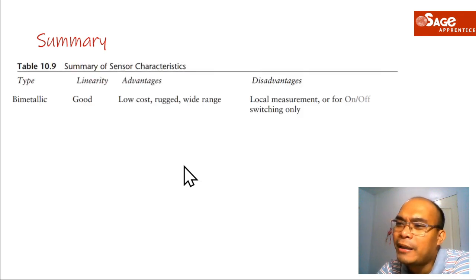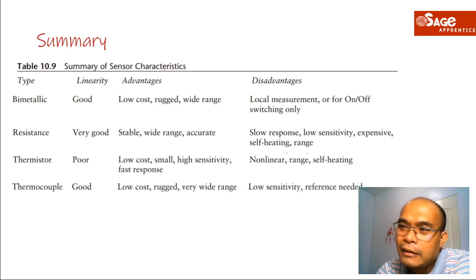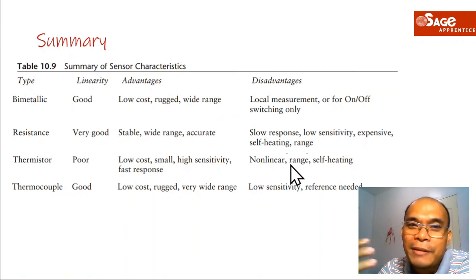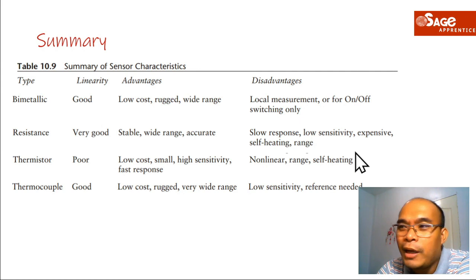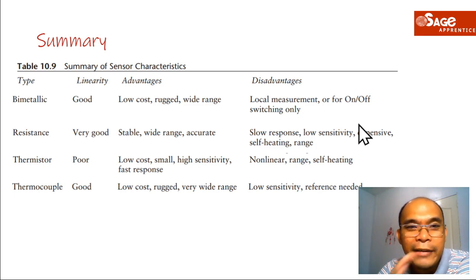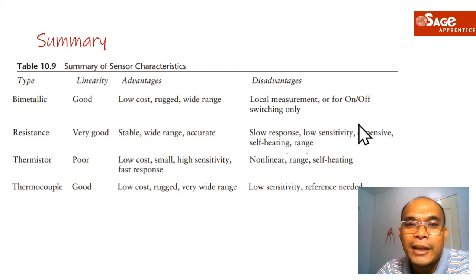To summarize, we have reviewed all five temperature measuring devices: bimetallic, mercury/non-mercury liquid expansion, RTD, thermistors, thermocouples, and pyrometers. You need to be familiar with the differences in linearity, advantages, and disadvantages of each — this is important when designing a system. For example, why use an expensive RTD if a simple on-off bimetallic strip is sufficient? If you have questions or clarifications, please comment below. Good luck!